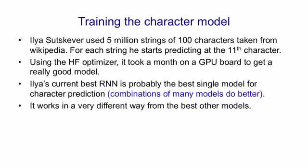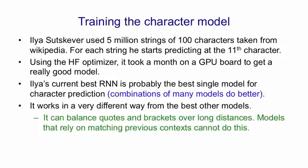It works in a very different way from the best other models. Ilya's model can balance quotes and brackets over long distances. Any model that relies on matching a specific previous context can't do that.